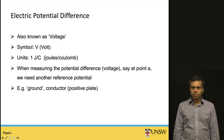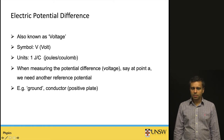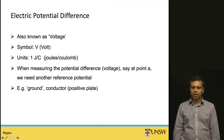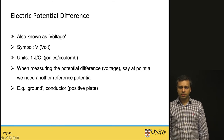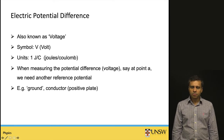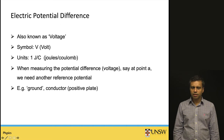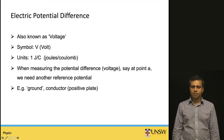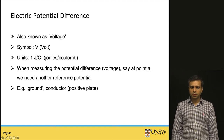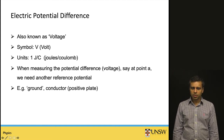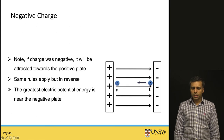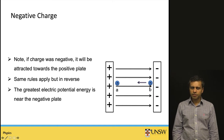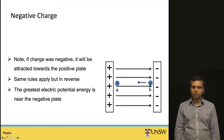When measuring a potential difference, we need two points. If we measure the potential at point A, we need a reference point — typically in circuits we use the ground, or a reference conductor such as the positive plate in a parallel plate capacitor. So we need another reference point when talking about the potential difference at point A.